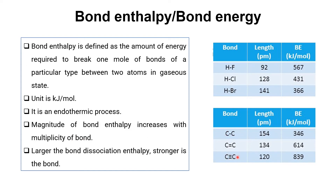Bond enthalpy increases with bond multiplicity. As we move from single to triple bond, attraction between atoms increases, so more energy is required to break the bond. For a single C–C bond, bond energy is 346 kJ/mol, while for a triple bond it is more than double. Bond enthalpy is also affected by bond length — as bond length increases (HF to HBr), the bond becomes weaker, so bond energy decreases: HF is 567, HCl is 431, and HBr is 366 kJ/mol.